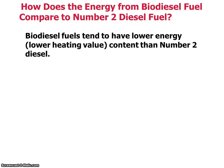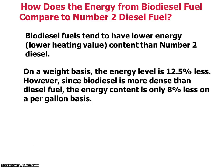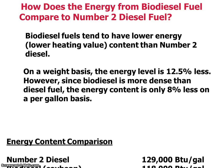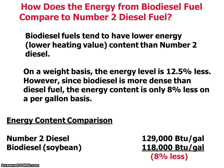Biodiesel compared to number two petroleum diesel: biodiesel fuels tend to have lower energy than number two diesel. On a weight basis, the energy level is 12.5% less. However, since biodiesel is more dense than diesel fuel, the energy content is only 8% less on a per gallon basis. Number two petroleum diesel gives you 129,000 BTU per gallon; biodiesel would be 118,000 BTU per gallon, which is 8% less. But with a B20 blend, you're going to have similar fuel consumption, similar engine torque, similar haulage rates, and improved engine lubrication by greater than 65%.